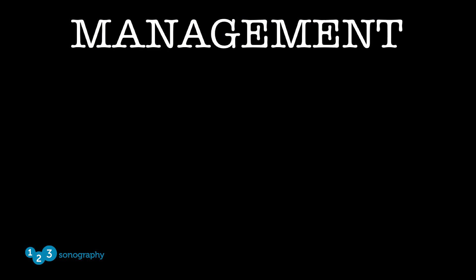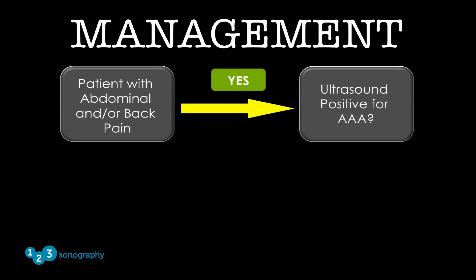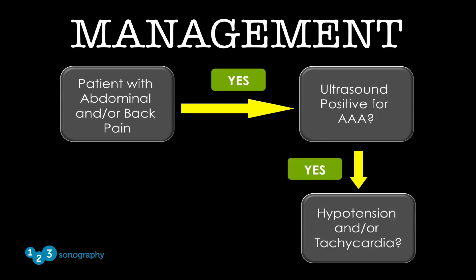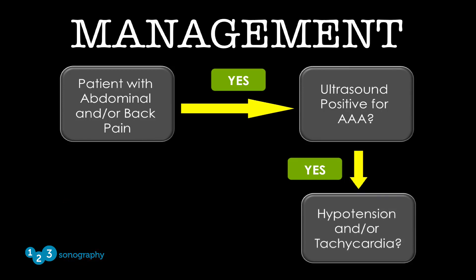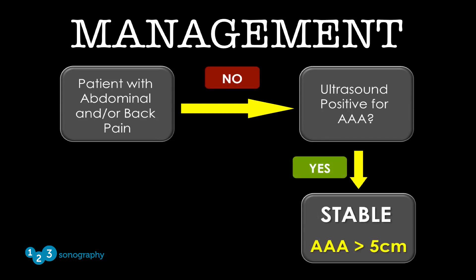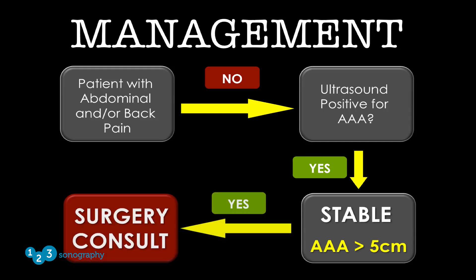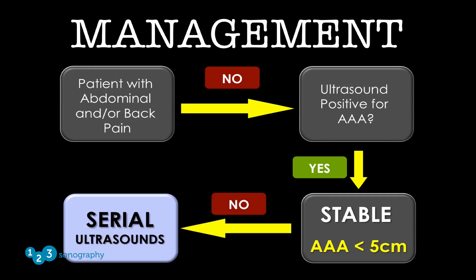This algorithm demonstrates the decision process for managing patients with abdominal aortic aneurysm. If an at-risk patient has abdominal and/or back pain, ultrasound should be performed. If an aneurysm is found with cardiovascular instability, immediate surgical consultation is required. If there is an aneurysm without instability or direct evidence of bleeding, CT should be considered to better describe the extent of disease. If the aneurysm is greater than five centimeters without pain or instability, surgical consult should be obtained before discharge. If less than five centimeters without back pain or instability, the patient should be followed as an outpatient with serial ultrasound exams.